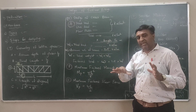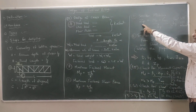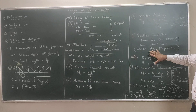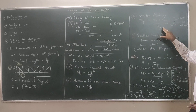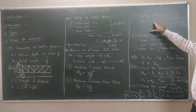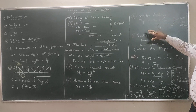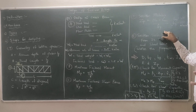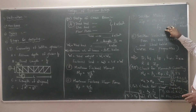After finding moment MP and shear VP, we find the plastic section modulus ZP. ZP is calculated as: ZP = MP × γM0 / Fy, where γM0 = 1.10 and Fy = 250 N/mm². This gives ZP in m³, which must be converted to cm³. Then select the appropriate I-section or angle section from the steel table where the tabulated ZP is greater than the required ZP.